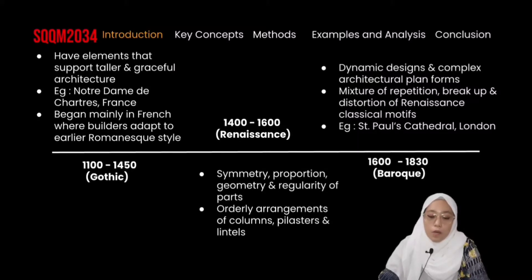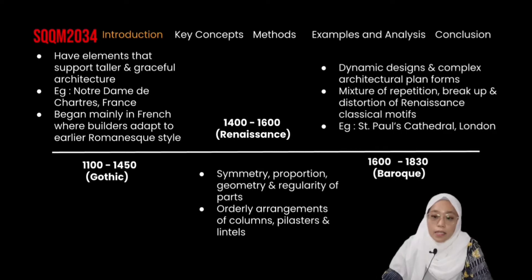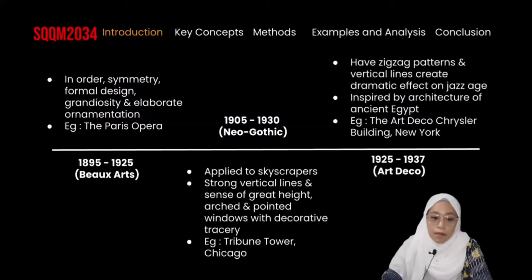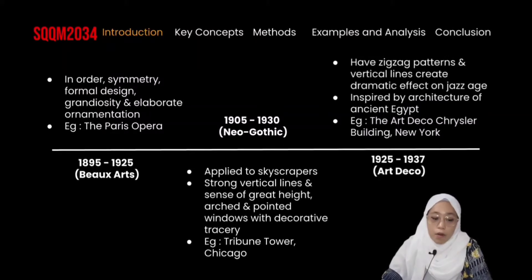Then we have the Renaissance era, where the architecture features symmetry, proportion, geometry, and regularity of parts. Next, we have Baroque architecture, which has dynamic designs and complex architectural plan forms. Besides that, we also have the Beaux-Arts style, where architecture is in order, featuring symmetry, formal design, grandeur, and elaborate decoration.